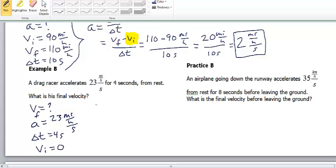Now, the equation that unites all these variables is, again, our acceleration equals V final minus V initial over delta T. However, we're going to rearrange this equation.